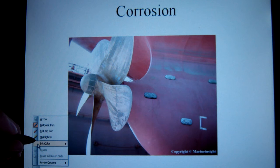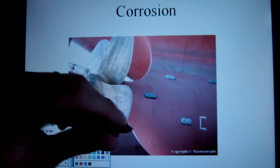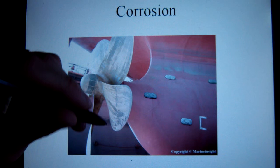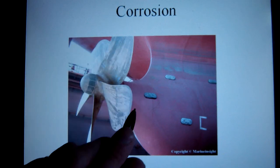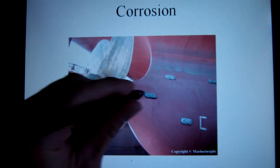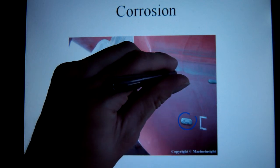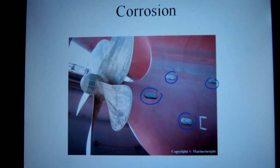What happens to the iron? It rusts. But you'll notice here, in this picture, you have these little metallic-looking silver add-ons. Those are little plates of zinc, and those actually prevent the corrosion.